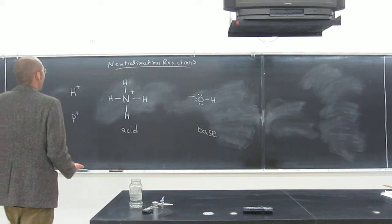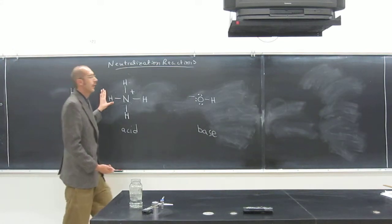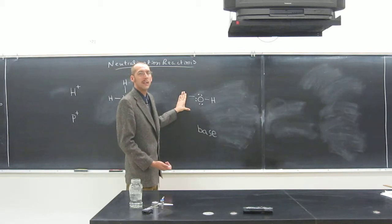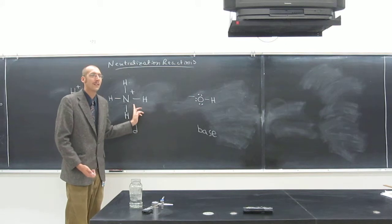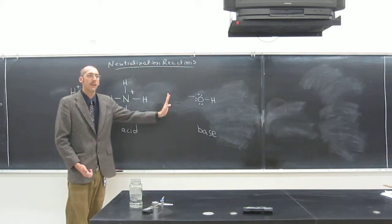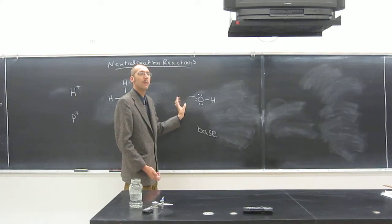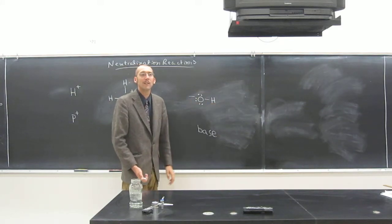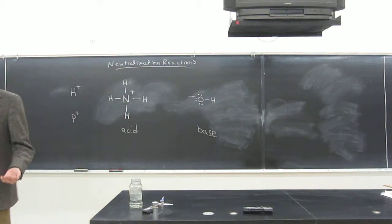So this guy here has a positive charge. He don't like it. This guy here has a negative charge. He don't like it. This guy here, as we learned before, likes to give up that proton. And this guy here, if he got that proton, would become water, become a very stable molecule. So it's to each other's benefit to transfer this proton.